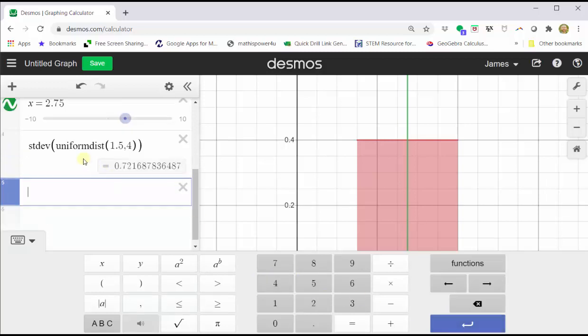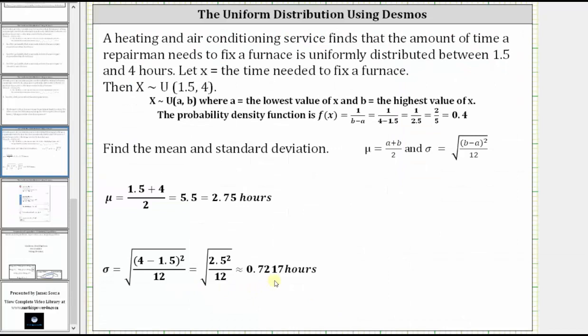To four decimal places, the standard deviation is approximately 0.7217, which is what we also get when we use the formula. I hope you found this helpful.